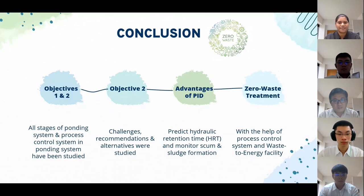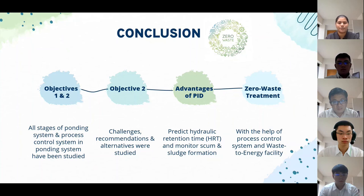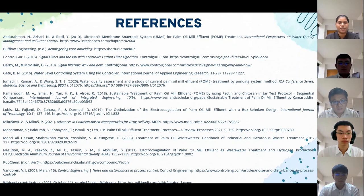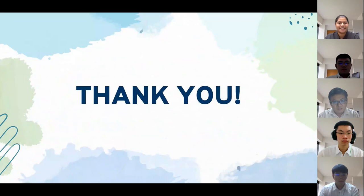In conclusion, we have achieved the objectives of this project. The first two objectives — studying the POME ponding system from pre-treatment to final discharge and the implementation of process control systems in the POME ponding system — have been achieved. The third objective has also been achieved, in which we identified two major challenges and respective recommendations. The major advantages of using PID controllers in ponding systems are that hydraulic retention time can be predicted and pond area affected by scum and sludge can be monitored and prevented. Ponding systems equipped with a suitable process control system and a waste-to-energy facility will effectively lead to zero-waste POME treatment. These are the references we referred to in completing this study. Thank you.